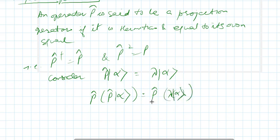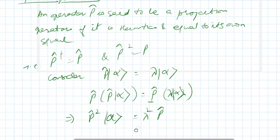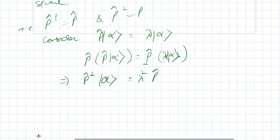The eigenvalue of P operator is lambda. That means this equation will lead to lambda squared ket alpha. This means that lambda squared is equal to lambda.